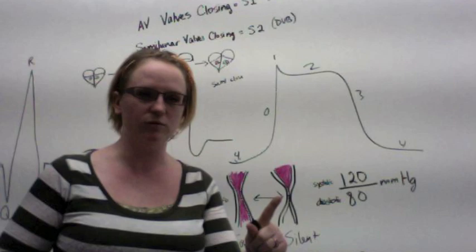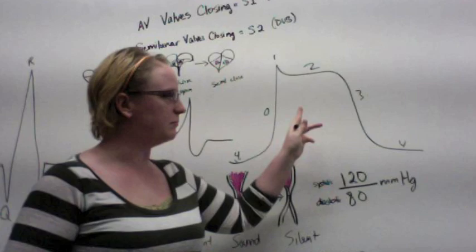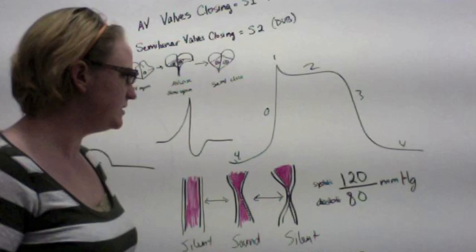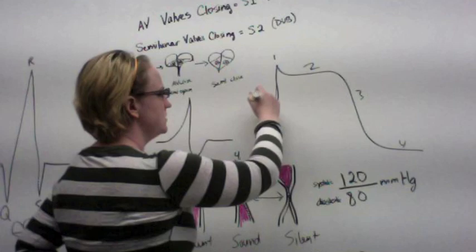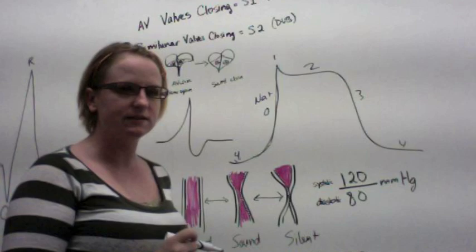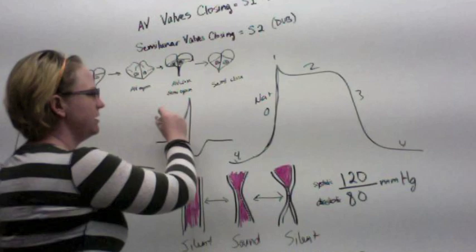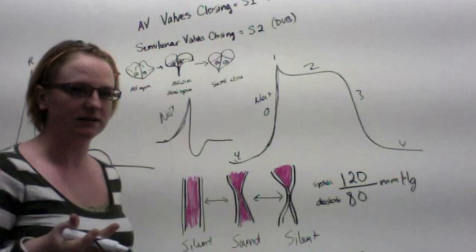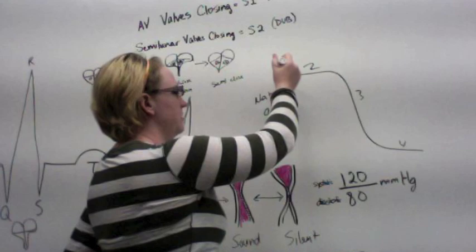Sodium is going to be responsible for the upstroke, which we'll talk about. Calcium is going to be responsible for the plateau we'll discuss in a second. Both of them leaving the cell accounts for the repolarization. So first, we have this upstroke — sodium is rushing into the cell. This causes the inside of the cell to become more positive, shown as this large upstroke, exactly like in a neuron.